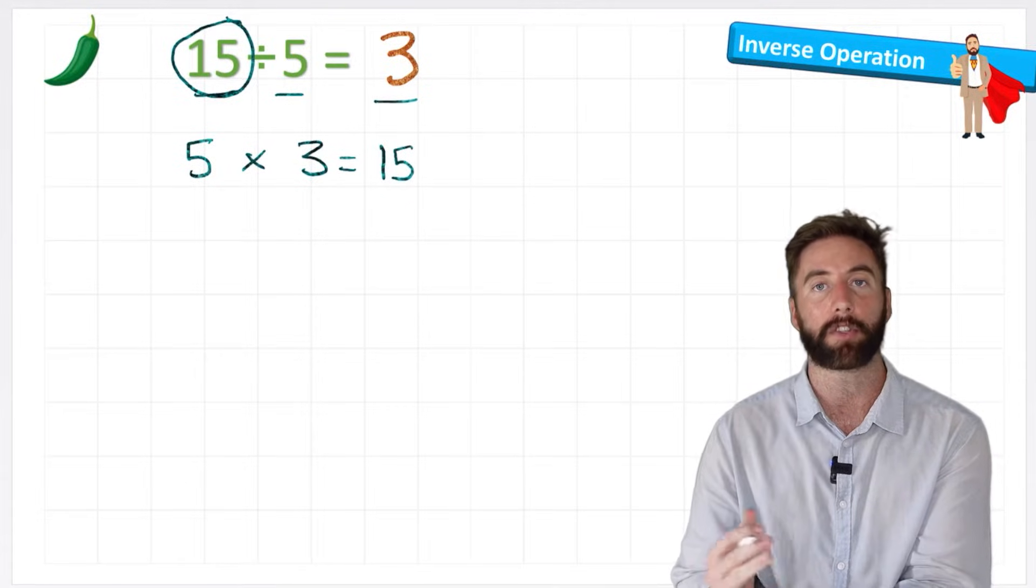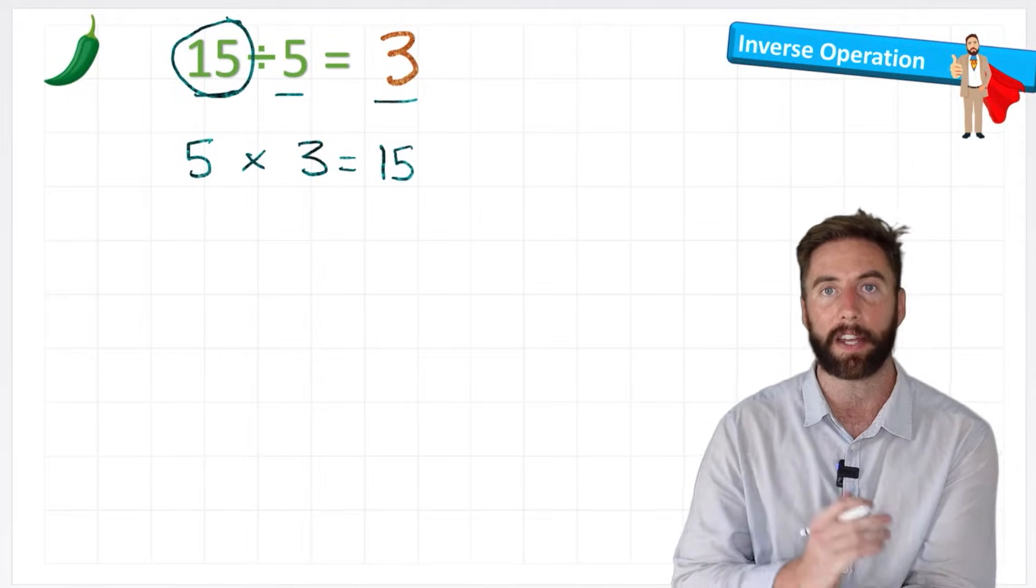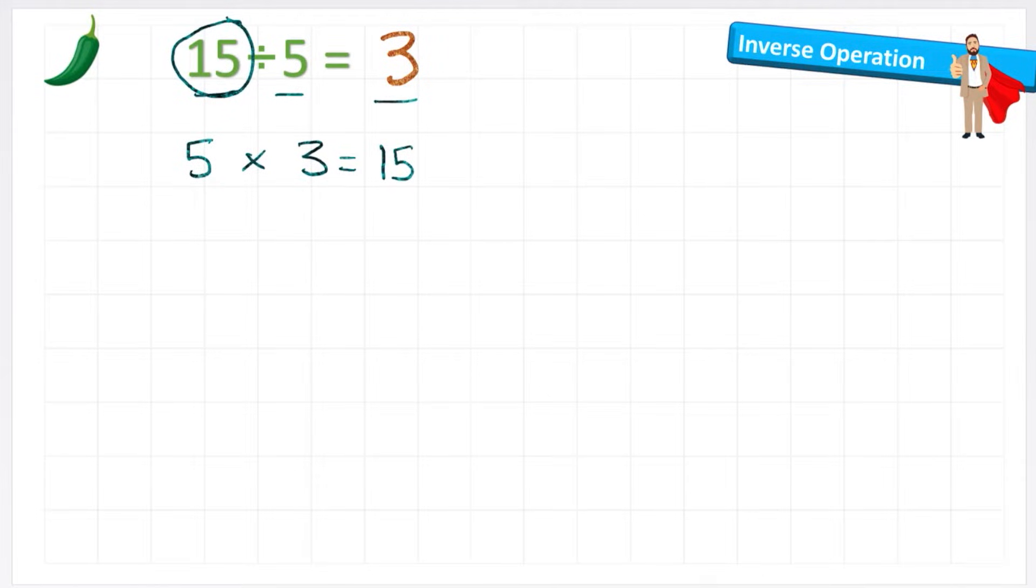And let's check it, 5 lots of 3, yes, equals 15. But I can see another number sentence here that would also work. What if we flip the 5 and the 3 around, and we used our commutative law, and I put 3 times 5, and I also know that 3 times 5 equals 15. So using the same numbers, so far I've made 1, 2, 3 separate number sentences. Well, I can actually see another one.